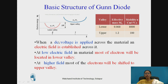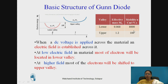It works on the principle of two-valley theory. There are two valleys: one is the lower valley and the other is the upper valley. Each has a different mobility and effective mass. In the lower valley, the effective mass is 0.068 and the mobility is higher at 8000 cm² per volt-second.